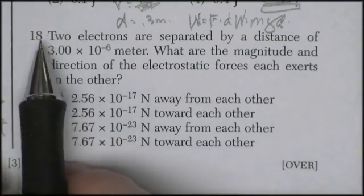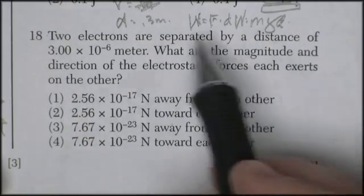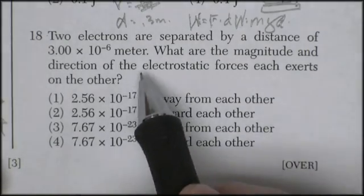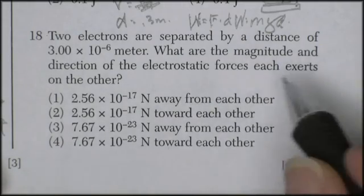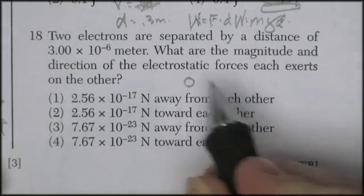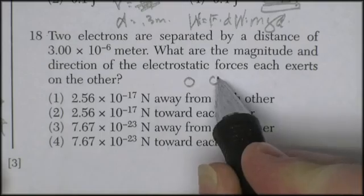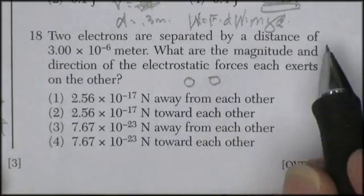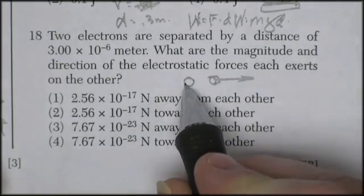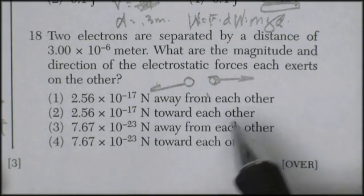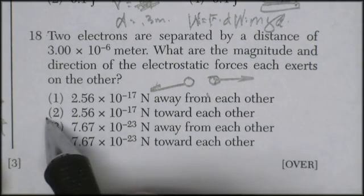Question 18. Two electrons are separated by a distance of 3 times 10 to the negative 6 meters. What are the magnitude and direction of the electrostatic force each exerts on the other? Let's do direction first. Separated by distance. Two electrons. So the force is going to be repulsive, away from each other.